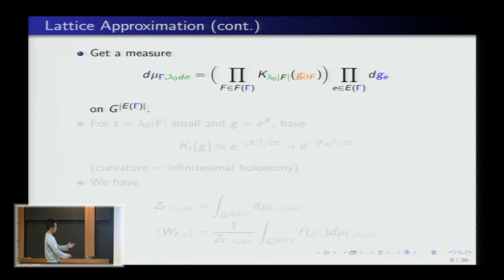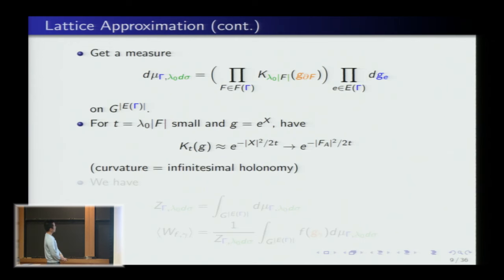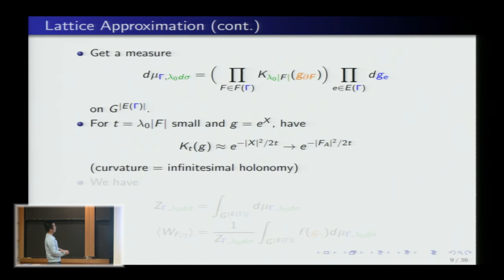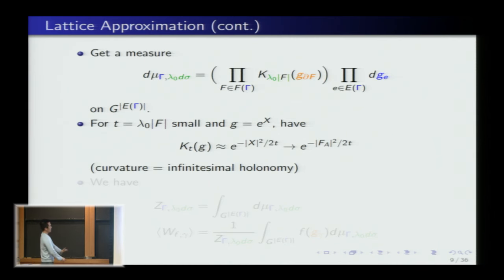Let me explain why this is a sensible thing. For small faces — because we're taking a continuum limit — for small time, the group-valued element is close to the identity and can be written as e^x where x lives in the Lie algebra. The heat kernel looks like a Gaussian for small times: e^{-x²/2t}. The way I defined g(∂f), that's going to be infinitesimal holonomy when the face is small. So x² is the curvature squared, and that formally is the Yang-Mills action. This is a heuristic motivation that this is a sensible discretization.